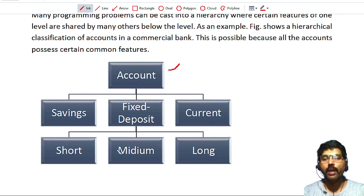In a similar way, we have one more example here. Fixed deposit has three types: short, medium, and long. All three types of fixed deposit have some common features. You can put those common features in the fixed deposit class. This is another example of hierarchical inheritance for a commercial bank system.